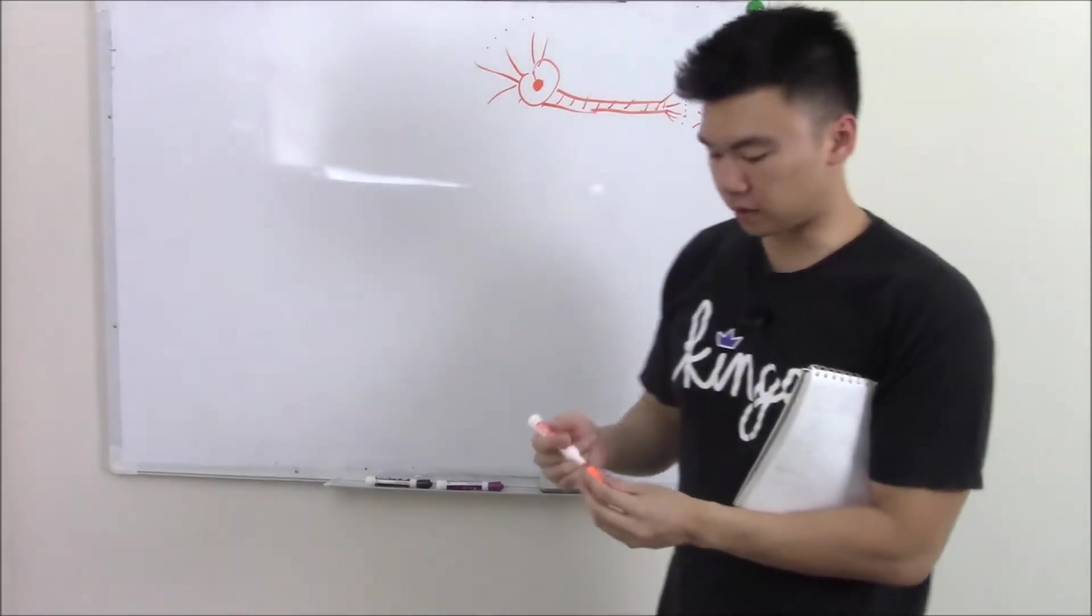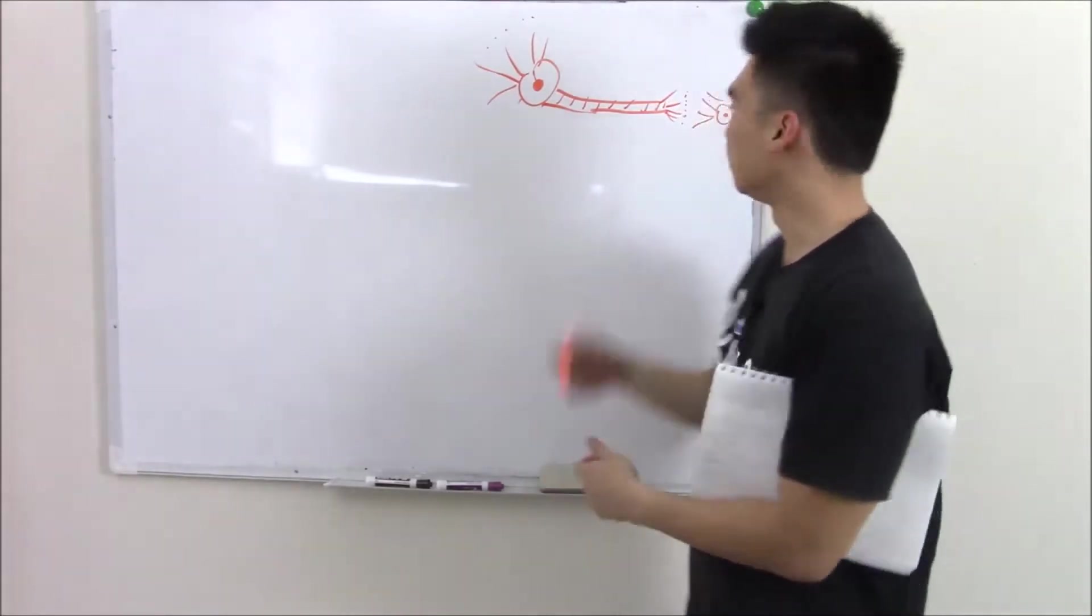That axon terminal will release some neurotransmitters, and the cycle will repeat itself. That's the functional unit of your nervous system, your neurons, and that's how they communicate, through neurotransmitters.